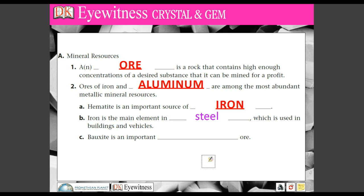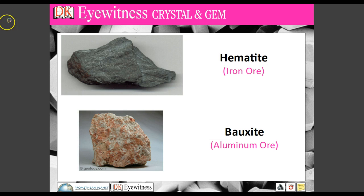Steel is used in buildings and vehicles. Aluminum isn't found as aluminum, but rather in what we call bauxite. It's found around the world, including in Jamaica in the Caribbean Sea, which is one of the main industries in Jamaica. Here's hematite — it looks like iron because it has high concentrations of iron. And bauxite can be red, white, or gray. As you can see, it's not just a solid chunk of aluminum. We have to extract it through heat-bearing or other chemical processes in order to get out the elements that we want.